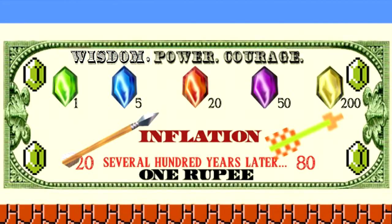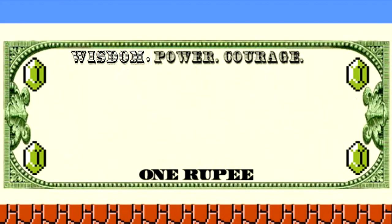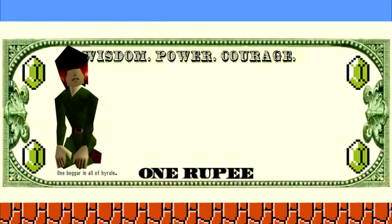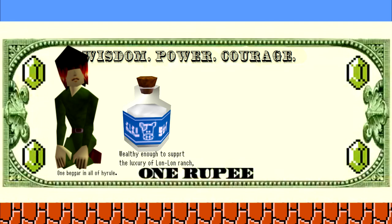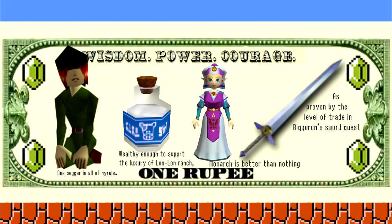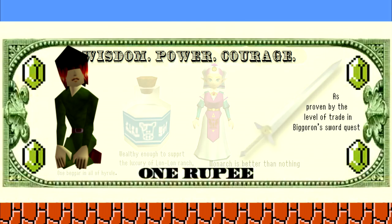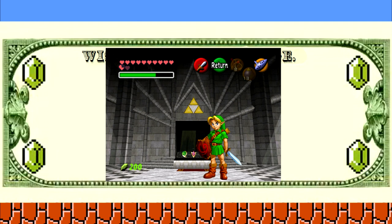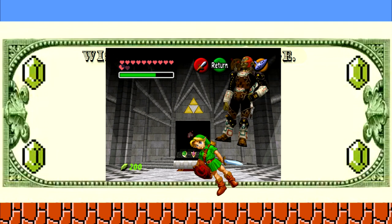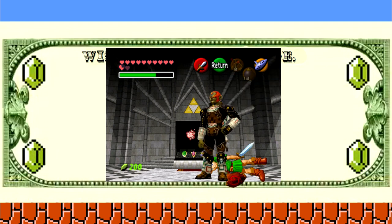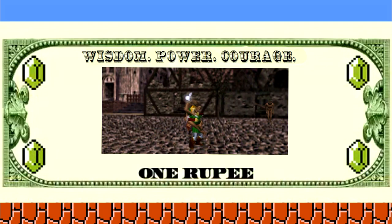After looking around for a while, factoring in things such as a low level of poverty, a wealthy middle class, political stability, and good trade between villages, I chose Ocarina of Time — well, Ocarina of Time before Link went and screwed everything up in the Temple of Time, letting Ganondorf in. Let's just say a ruined town square does not make for an efficient economy.